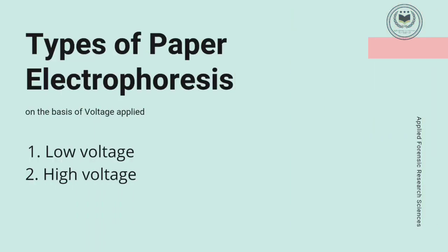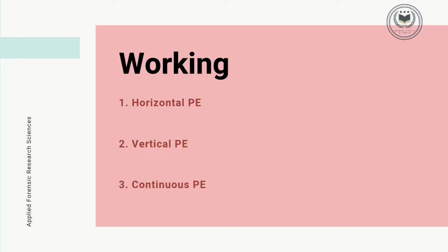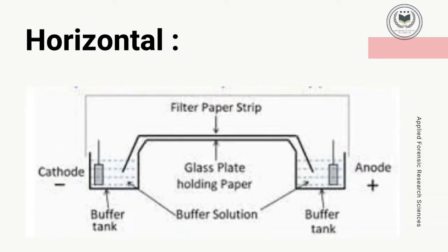Types of paper electrophoresis based on voltage applied are low voltage and high voltage, which we will discuss in a different video. Types of electrophoresis based on design of instrument are horizontal, vertical, and continuous. Let's start with horizontal paper electrophoresis.